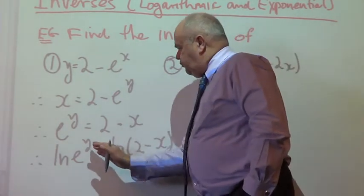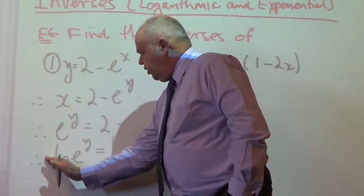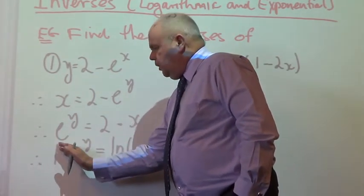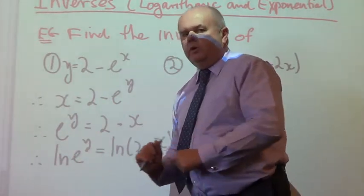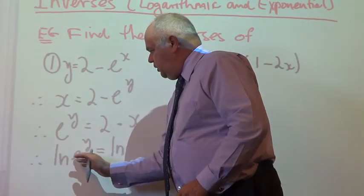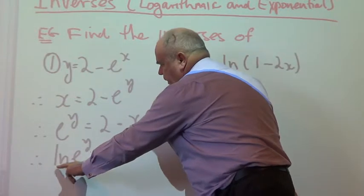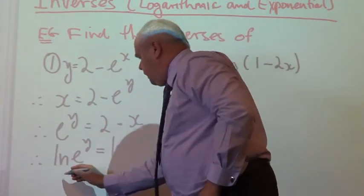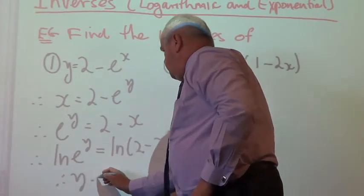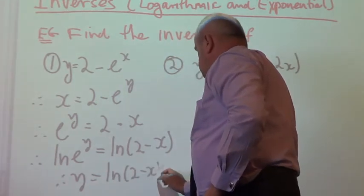Now the thing about this is the y, using that log law, the y can be taken down there. And we know that log base a of a is always equal to 1. Similarly, this is the natural logarithm here, so ln e will also equal 1. So that y comes down, that cancels itself out, and we are left with y equaling ln 2 minus x. So that one's done.